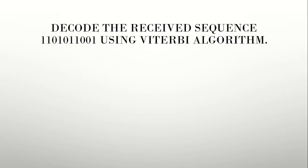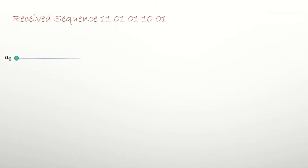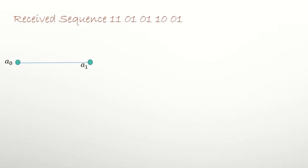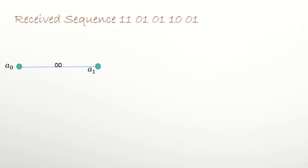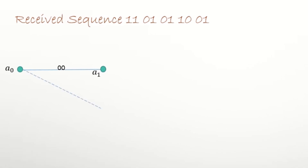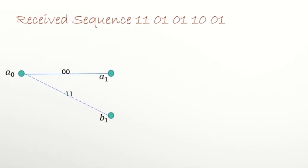Let's get started with the problem: decode the received sequence using the Viterbi algorithm. The first step is to take the received sequence and write it in pairs. Then we start drawing the trellis diagram. We start with state A, and from A we have two possibilities: if the input is 0 (solid line) it stays at A producing coded output 00, and if it is 1 it goes to B and the code is 11.